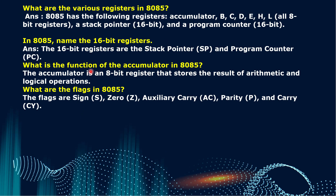Now let's start with some fundamental questions. What are the various registers in 8085? The 8085 has the following registers: accumulator (A), then B, C, D, E, H, L — all are 8-bit registers. The stack pointer is 16-bit and the program counter is also 16-bit.